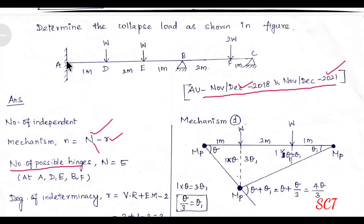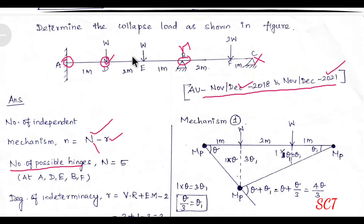As told in the introduction video, fixed ends form plastic hinges. This end is simply supported, so there is a plastic moment MP. Here is an MP, here is an MP. Under each load, here is an MP, here is an MP, here is an MP. So total: 1, 2, 3, 4, 5 MPs.